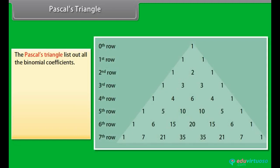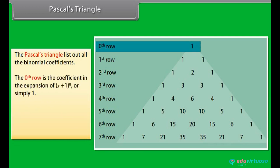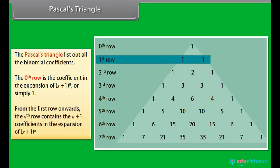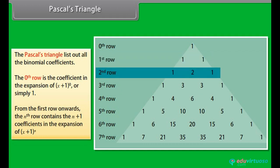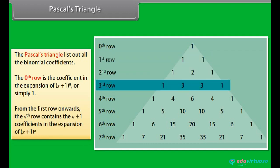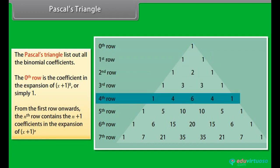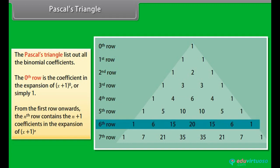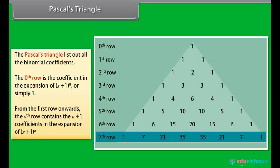Pascal's triangle lists out all the binomial coefficients as shown in the figure. The 0th row is the coefficient in the expansion of (x + 1)⁰, or simply 1. From the first row onwards, the nth row contains the n+1 coefficients in the expansion of (x + 1)ⁿ.